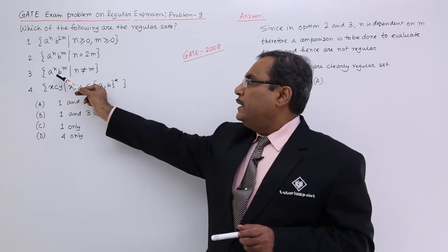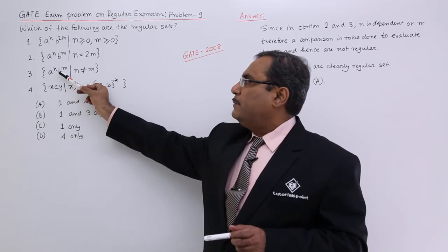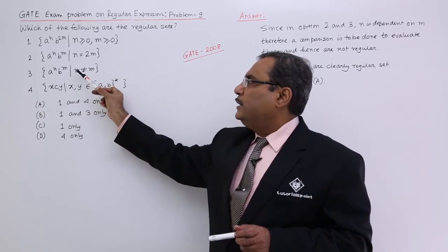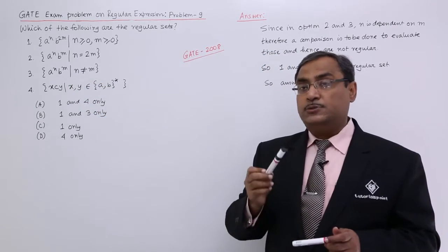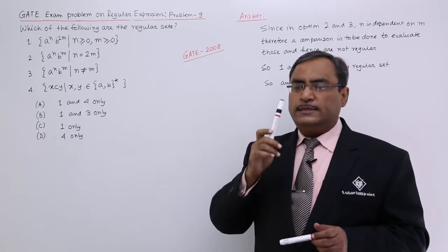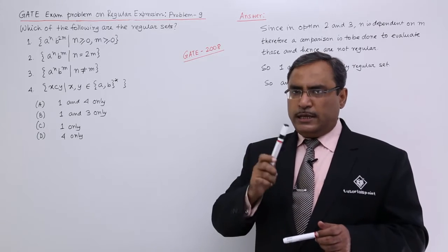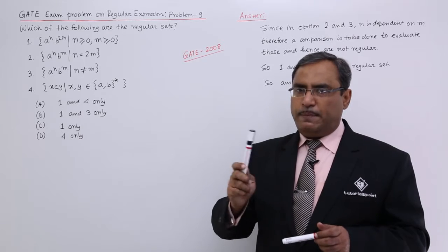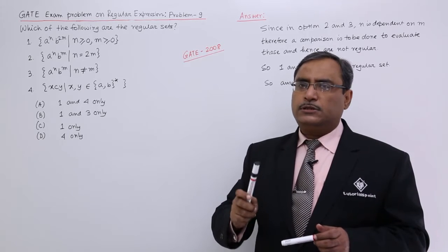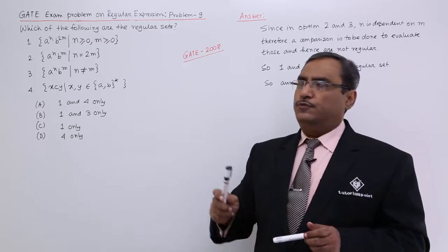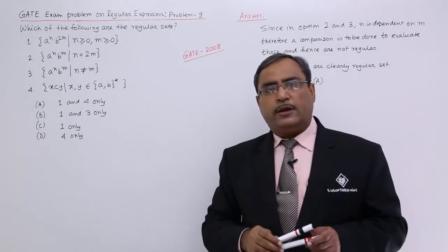Next one, we are having a to the power of n and b to the power of m, but n should not be equal to m. It has to be ensured that always n is not equal to m. That is a correlation, a dependency between the numbers of n and m. So for them regular expressions cannot be written.